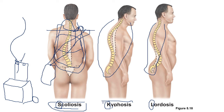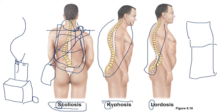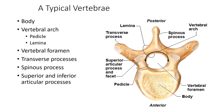Scoliosis, kyphosis — these are conditions you may see. In females with scoliosis, aside from uneven shoulders, even a skirt will appear uneven — one side higher than the other. If you examine the vertebrae, they can be dismantled and separated.